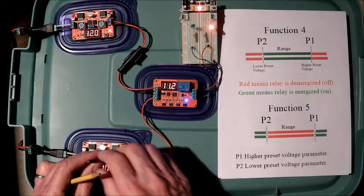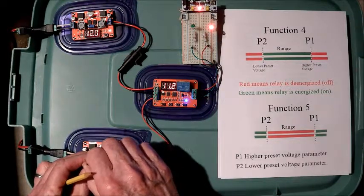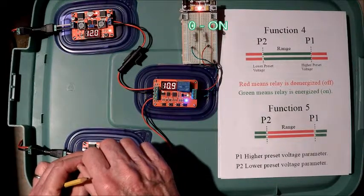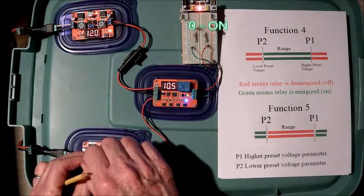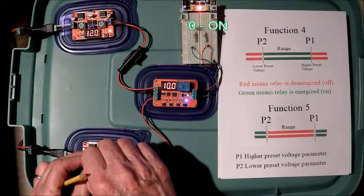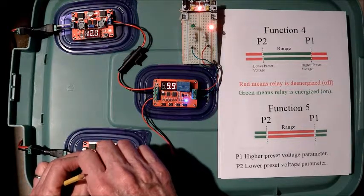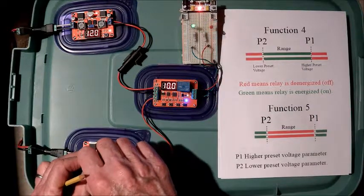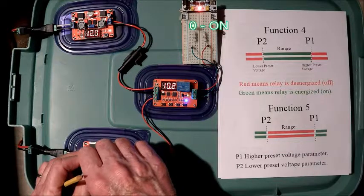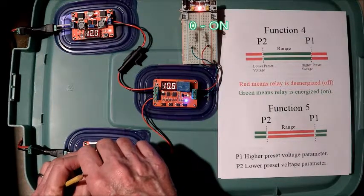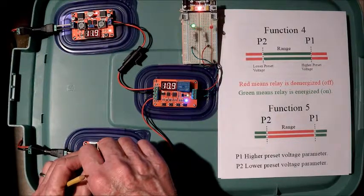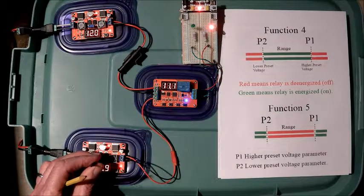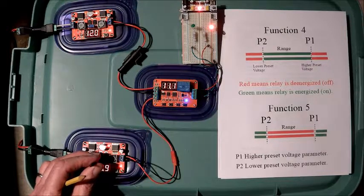Now, when we come down below the 11 volts, the relay should turn on. And there it is. Continue on down to the lower preset voltage, 10 volts. When we go on the other side of that, the relay de-energizes. We come up on the other side of that, over 10 volts, the relay will energize. And when we hit 11 volts, it'll de-energize. So, within range, the relay is energized. Out of range, it is de-energized.